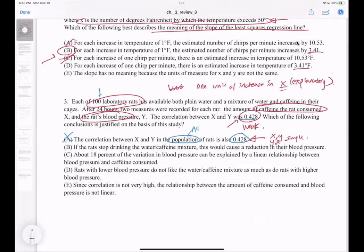If the rats stop drinking the water-caffeine mixture, this would cause a reduction in their blood pressure. Remember, causation does not mean correlation. These two mean completely different things. Causation means cause and effect - if you do this, this will happen 100 percent in sequence. Correlation means the likelihood of how well two relationships are associated with one another.